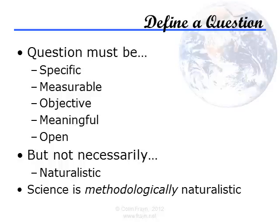This leads to the next point: a scientific question should be measurable. If we can't measure anything related to the question, we have no way of applying an empirical method like science to solving it. Moral questions usually fall down here because we don't have a scale of right and wrong against which to measure deeds. Similarly, 'What's the best way to travel from London to Paris?' isn't measurable until we define the criteria — whether we mean minimum distance, quickest, cheapest, most scenic, safest, or lowest CO2 emissions. Once we define the criteria, it becomes a scientific question.